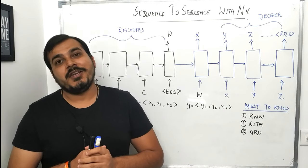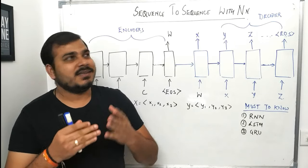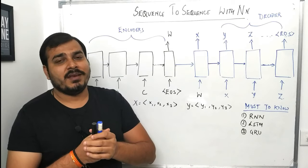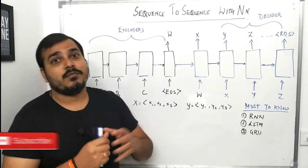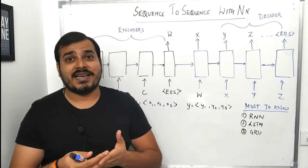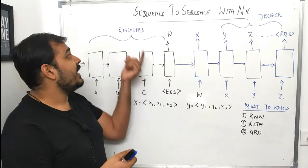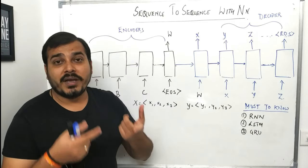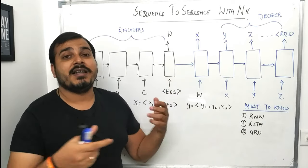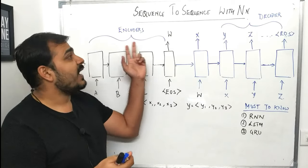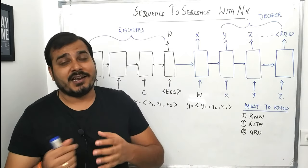Hello, so guys today in this particular video we are going to learn about sequence to sequence with neural networks. I was busy due to some other work, but now I'll be focusing more on the deep learning playlist and uploading many videos. We'll start with sequence to sequence, understand encoders and decoders, and then we'll also see the practical implementation of encoder-decoder with TensorFlow 2.0.